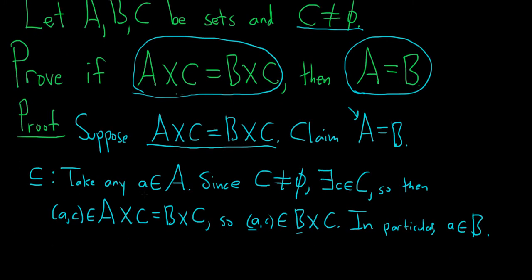So we have an element in capital A, and that element is also in B. So every element in capital A is in capital B. This shows that A is a subset of B.